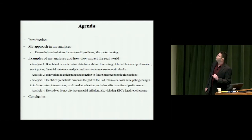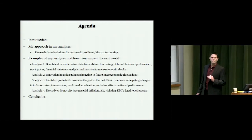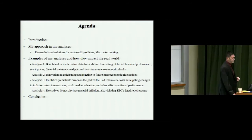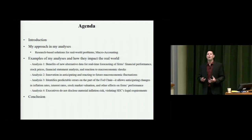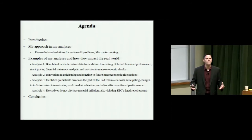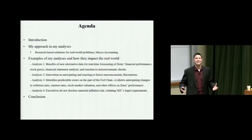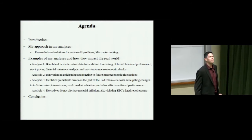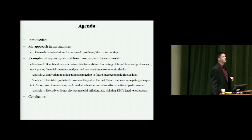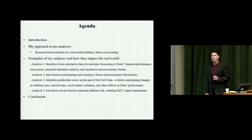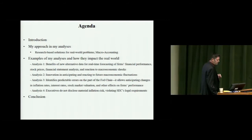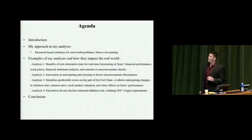The first example shows the benefits of new alternative data. The second analysis shows innovation in anticipating and reacting to future macroeconomic shocks — in particular, how aggregation of accounting profits across many firms can be an incrementally informative leading indicator for future GDP growth three quarters ahead, as well as for understanding turning points in the business cycle.